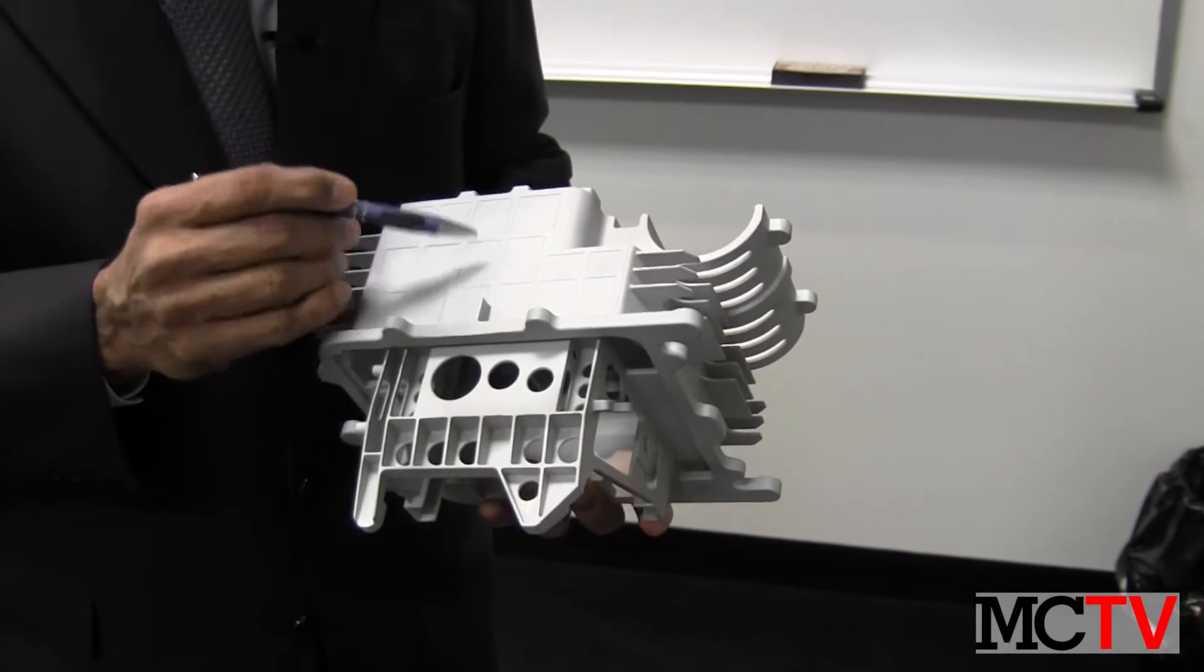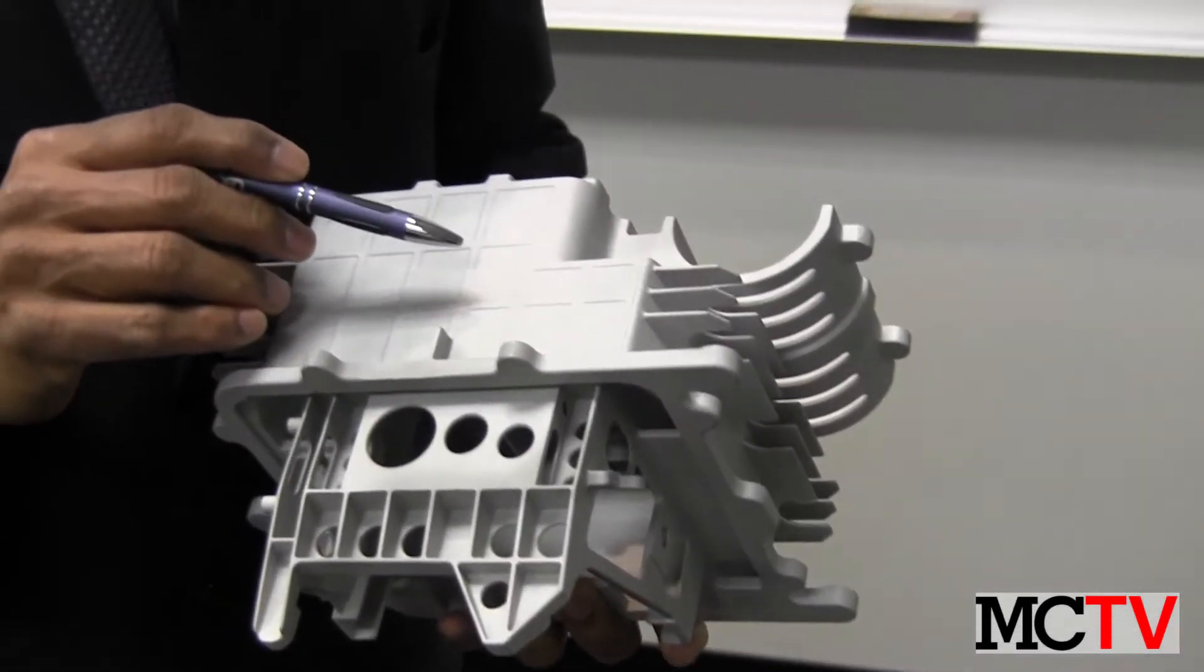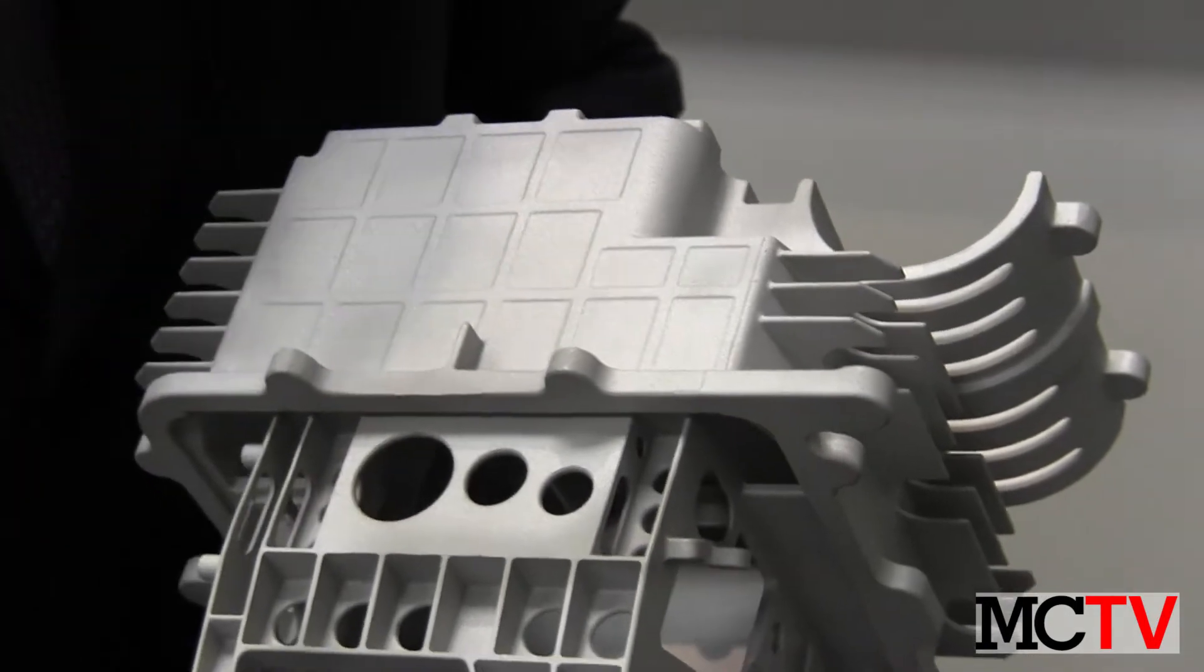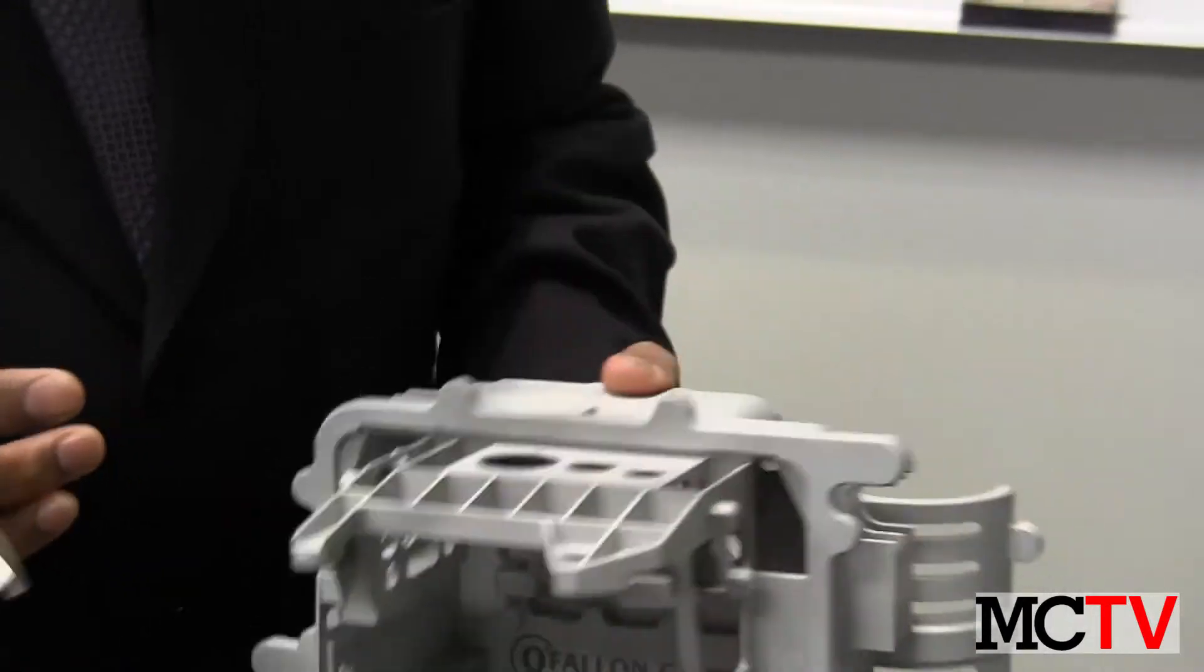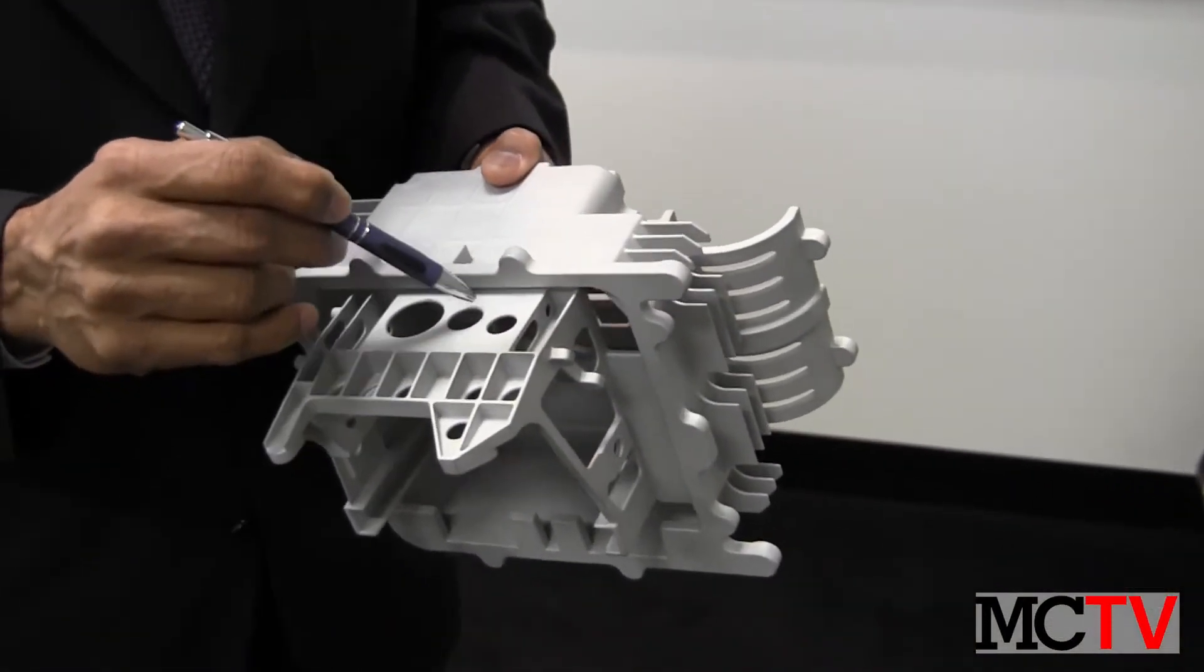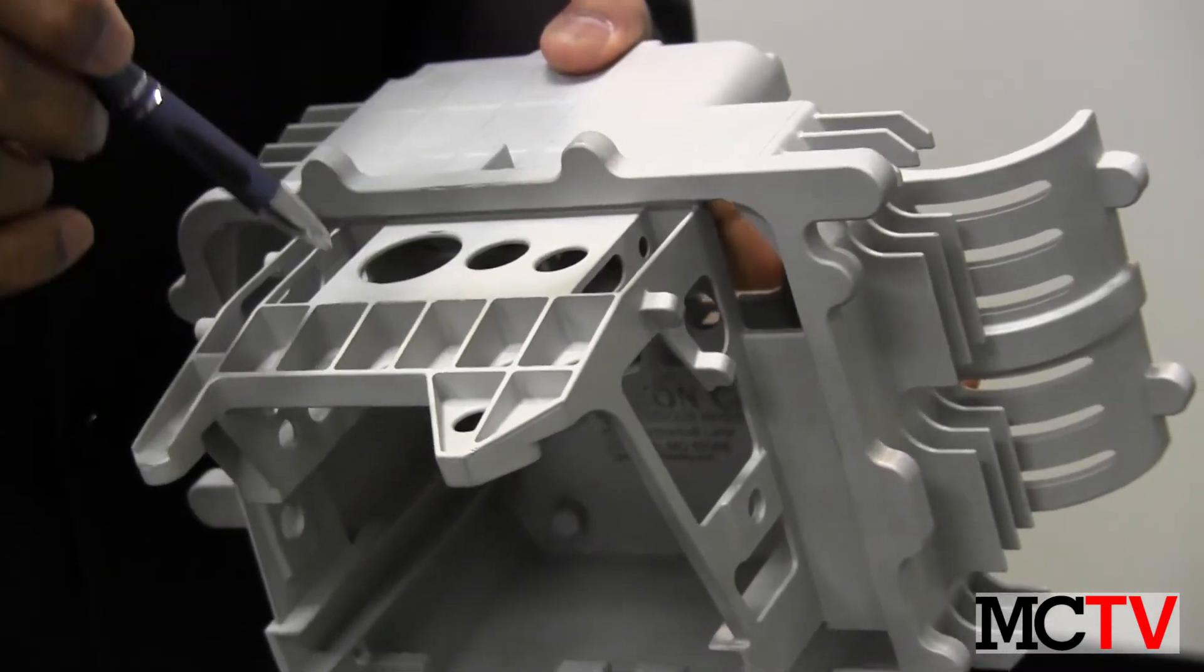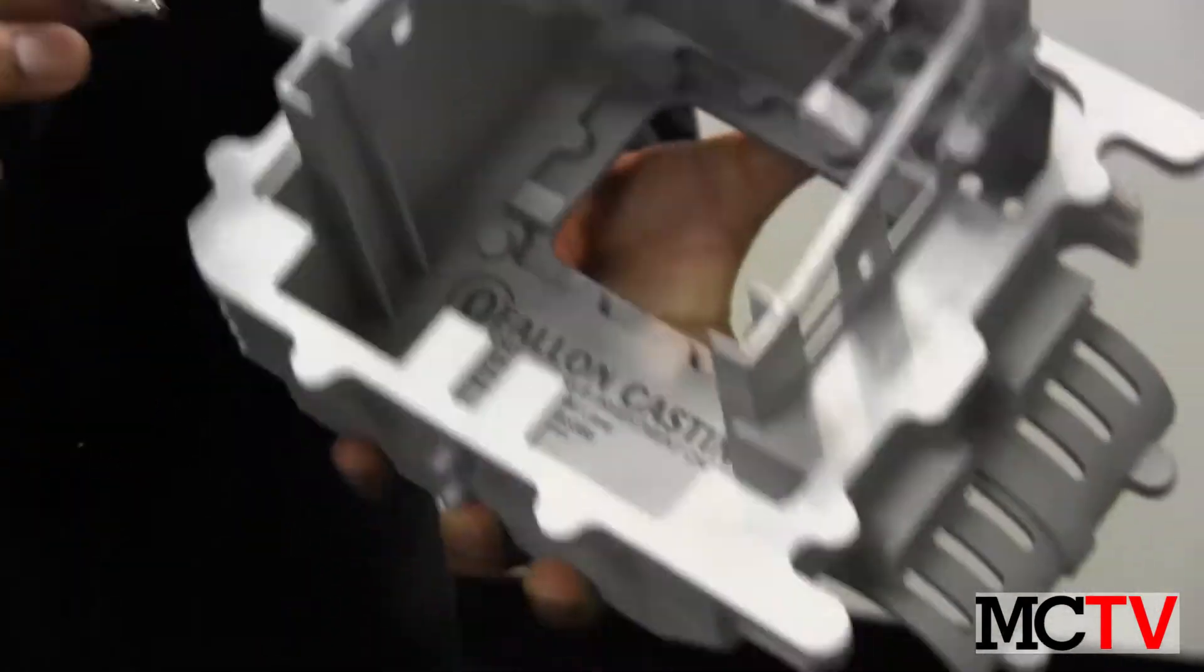So this is a classic example of a weight reduction smart idea of generating gussets to have the same stiffness but at a lower component weight. Another example in this case study is there are a lot of cored holes which are really added to take further weight out without compromising the form, fit, and functionality of this component.